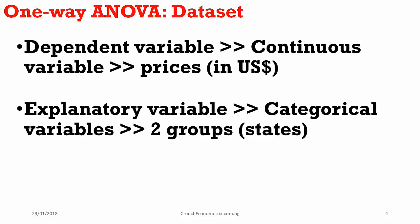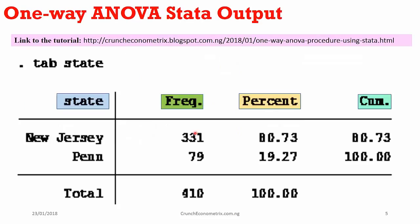In my example today, my dependent variable is a continuous variable, which is in line with the ANOVA assumption, and my independent variable is a two-group categorical variable. Before you run your ANOVA, you might want to see the distribution of your categorical variable. My categorical variable here states two groups: New Jersey and Pennsylvania. The frequency captures the number of observations — I have 331 for New Jersey and 79 for Pennsylvania. New Jersey has 331, giving it 80%, while Pennsylvania has 79, giving it 19.27%. The cumulative tells you the total accumulation of the two groups' percentages in the data set.